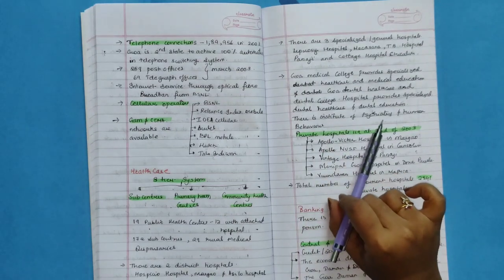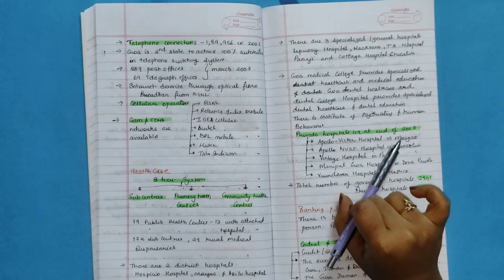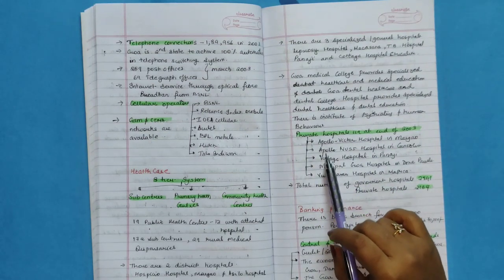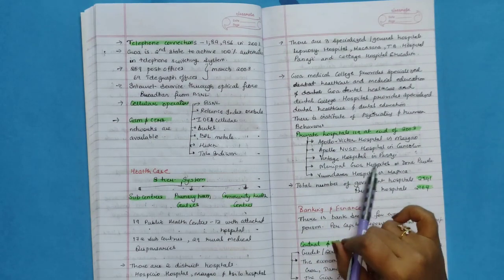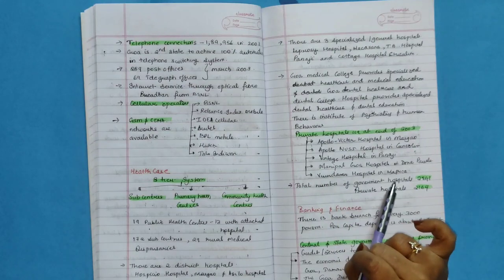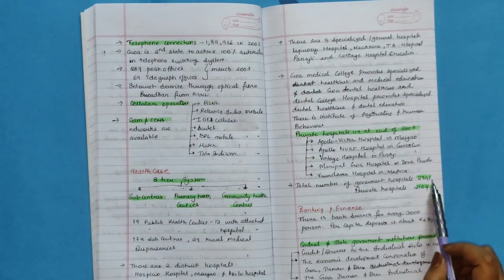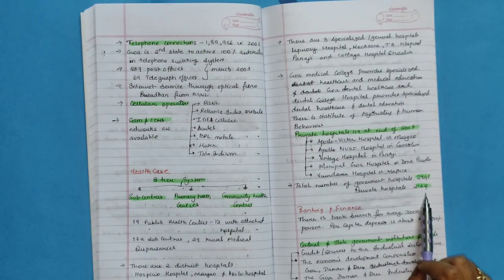Private hospitals: 119 at end of 2003. Apollo Victor Hospital, Nerul, Vintage Hospital in Panjim, Manipal Hospital at Dona Paula, Vrindavan Hospital in Mapusa. Total number of government hospital beds: 2,841 in private, 2,164.